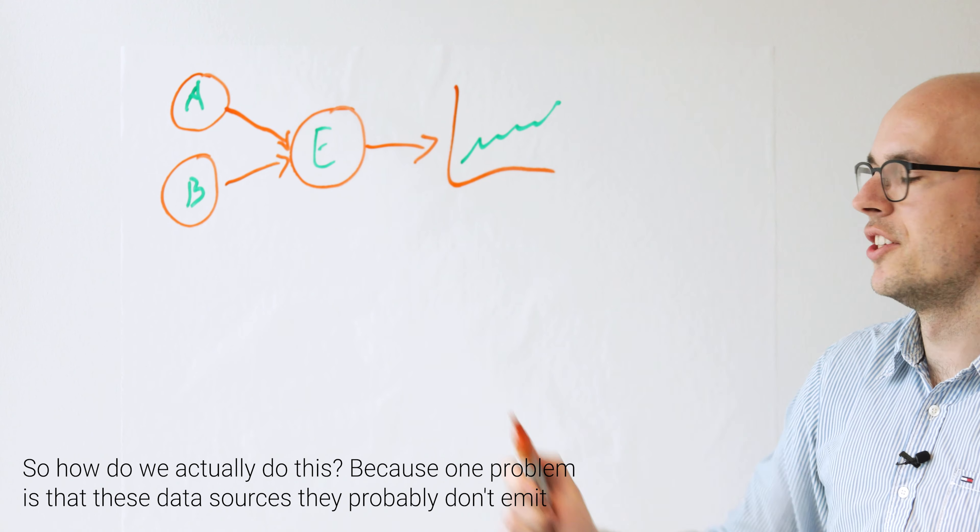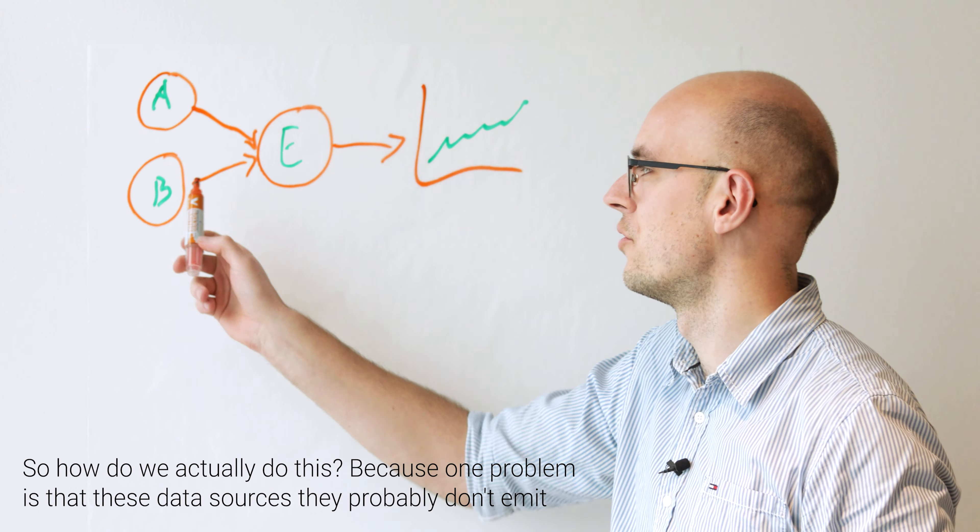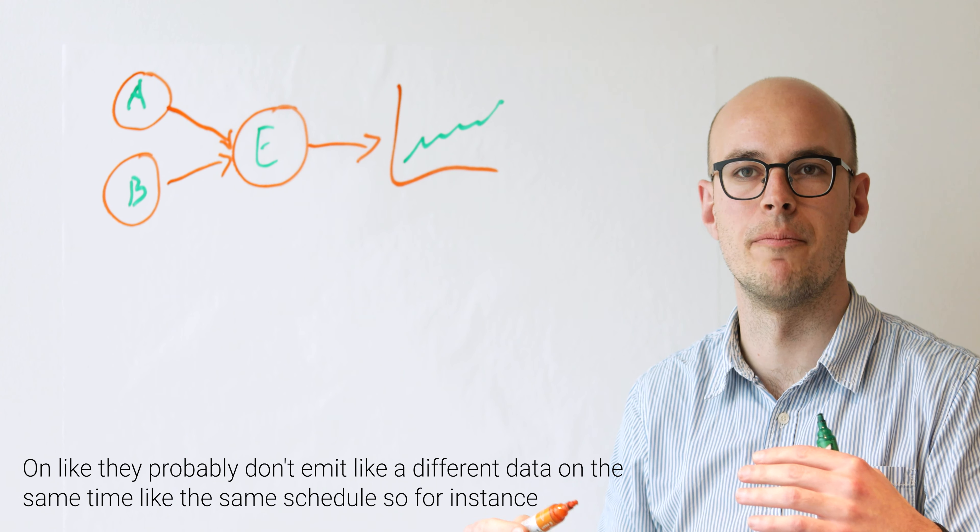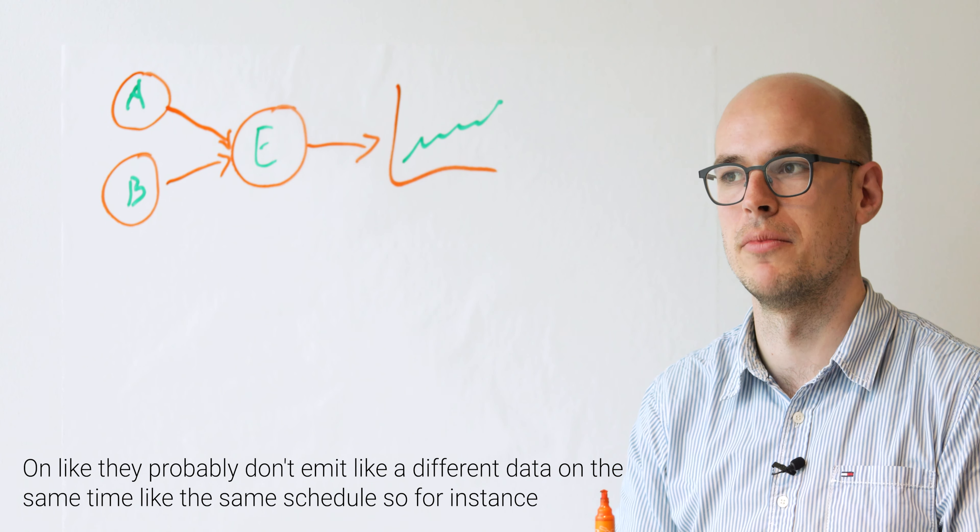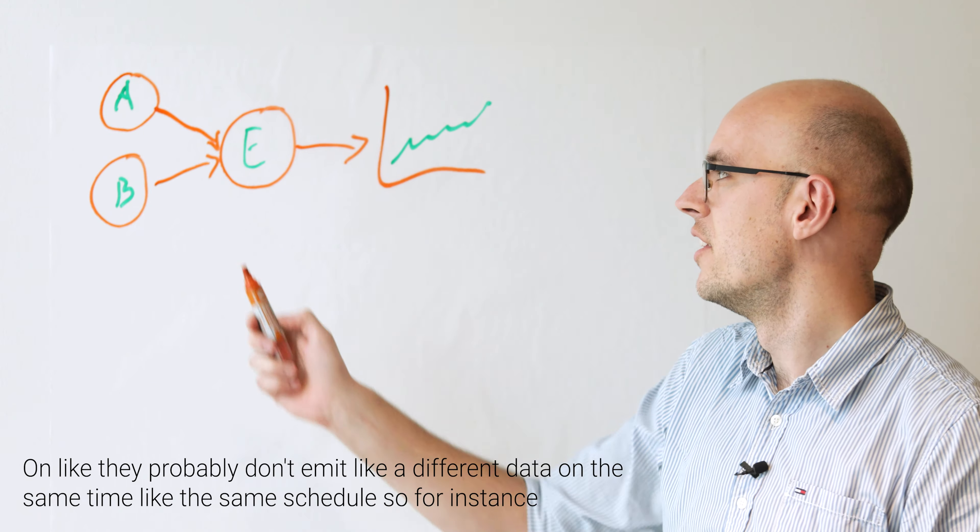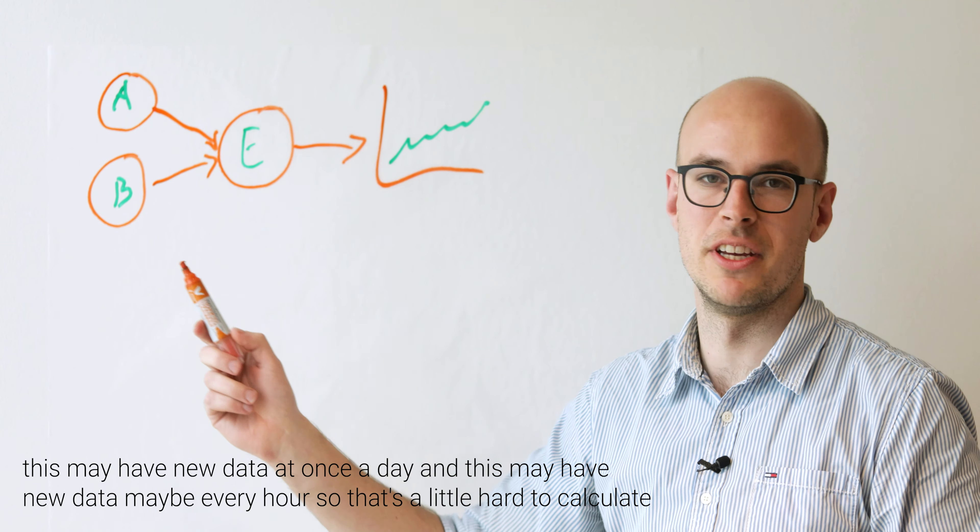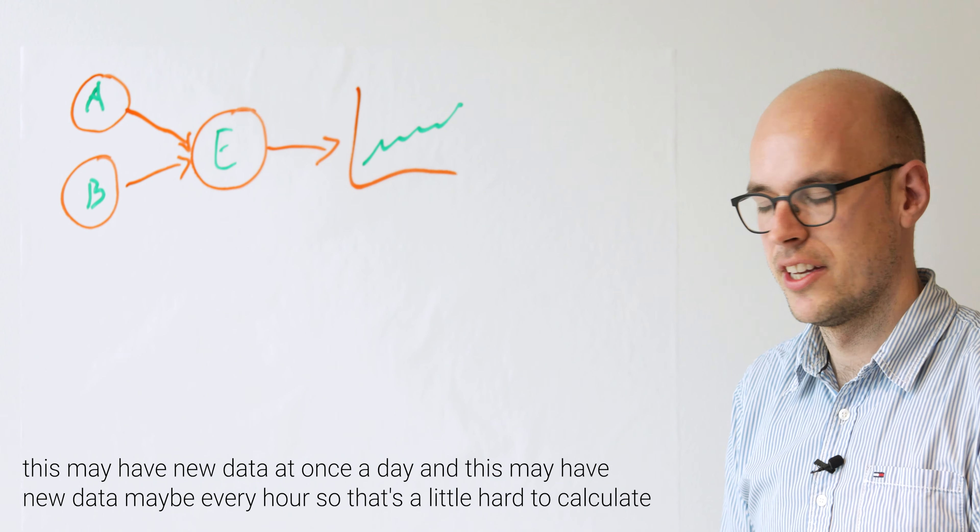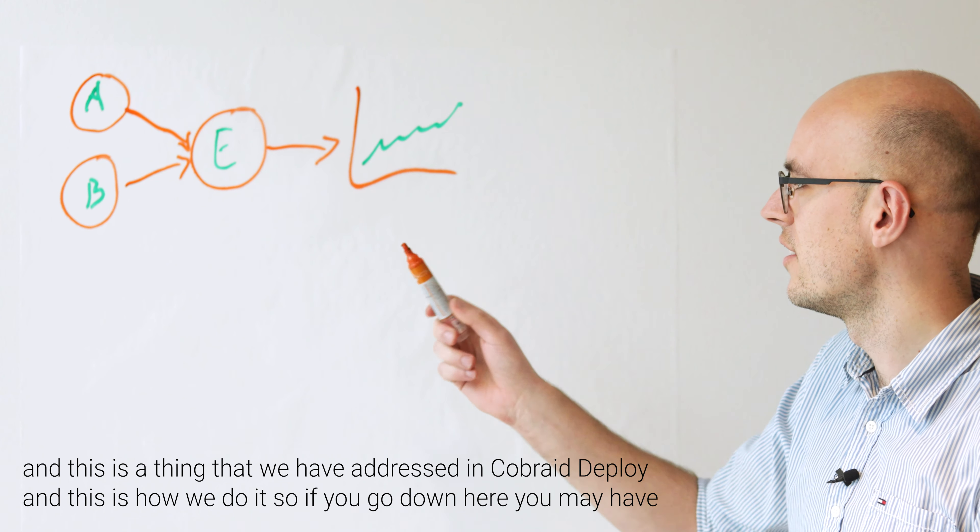So how do we actually do this? Because one problem is that these data sources, they probably don't emit different data on the same time, like the same schedule. So for instance, this may have new data once a day, and this may have new data maybe every hour. So that's a little hard to calculate. And this is a thing that we have addressed in Cobraid Deploy, and this is how we do it.